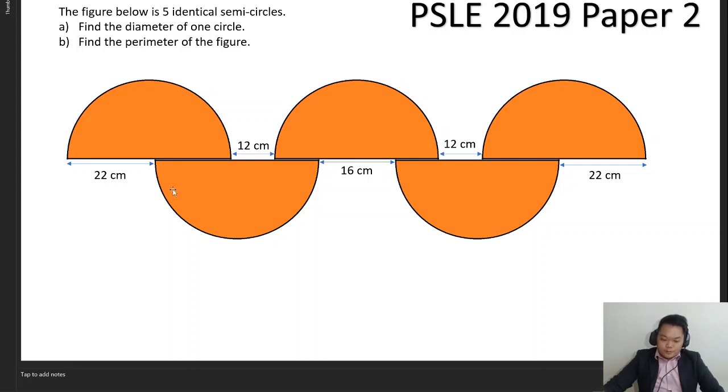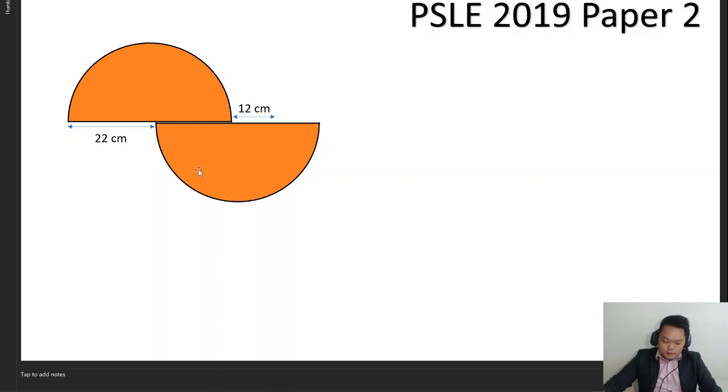When you look at this figure itself, there seems to be very little information on how the diameter could be found. So let's break it down into these two semicircles alone. Now we observe that this gap here is 22 cm. What if we are to take it away and just imagine that we are to slide this in here?